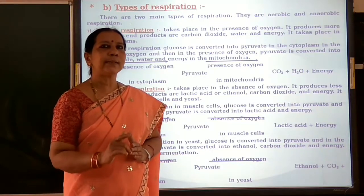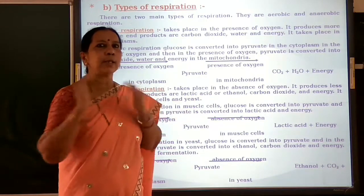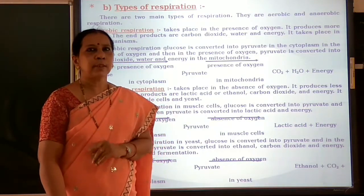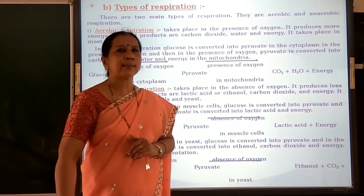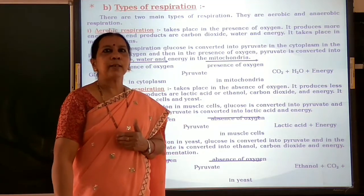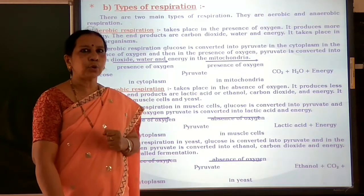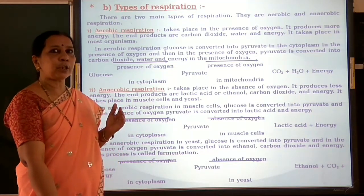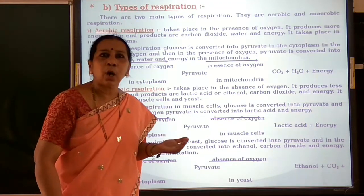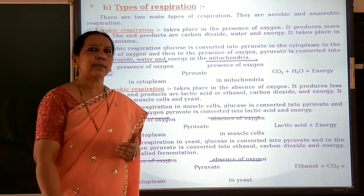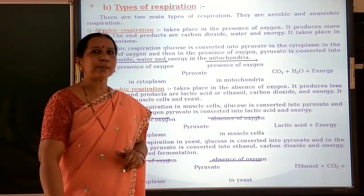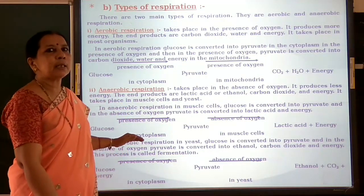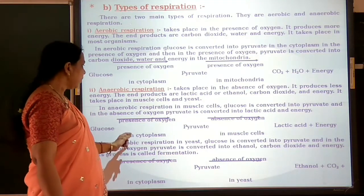This lactic acid accumulates in the muscle cells due to lack of oxygen. Pyruvate gets converted into lactic acid and energy. When an athlete runs fast, he may experience muscle cramps. These cramps are due to lactic acid accumulation in the muscle cells due to lack of oxygen. The glucose first gets converted into pyruvate, and pyruvate, in the absence of oxygen, gets converted into lactic acid which accumulates in the muscles and causes cramps. This may be asked as a 'give reason' question.